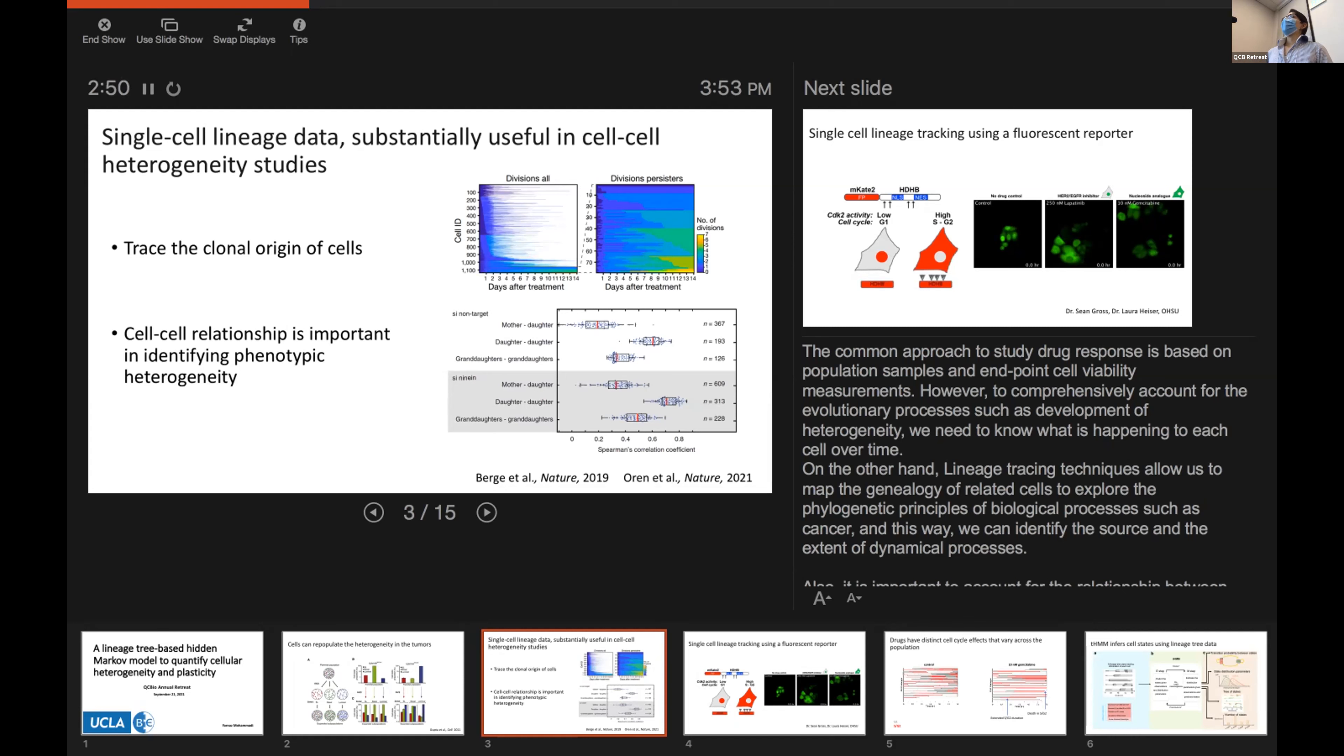Also, it's important to account for the relationship between the cells. As an example, in this study, they have shown that there is a high correlation between sister cells and cousin cells. There's a high correlation in the amount of time they spend during their cell cycle.